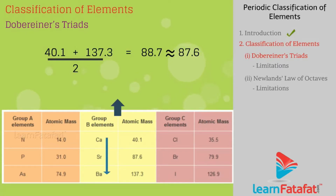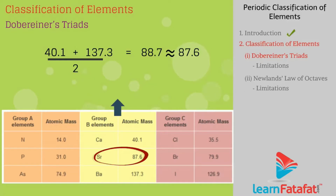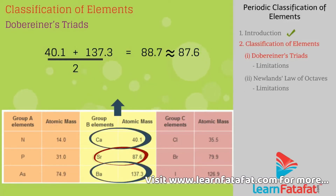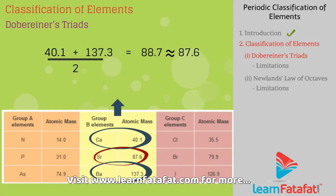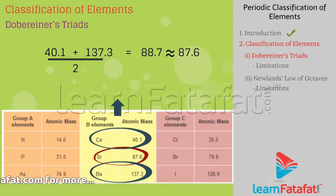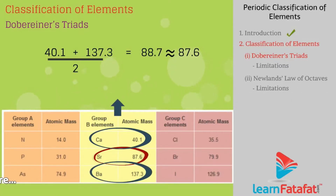He showed that the mass of the middle element is roughly the average of atomic masses of the other two elements when arranged in increasing atomic mass. For example, (40.1 + 137.3) / 2 = 88.7, which is approximately equal to 87.6. For this triad, the atomic mass of Sr (87.6) is the average of atomic masses of Ca and Ba.